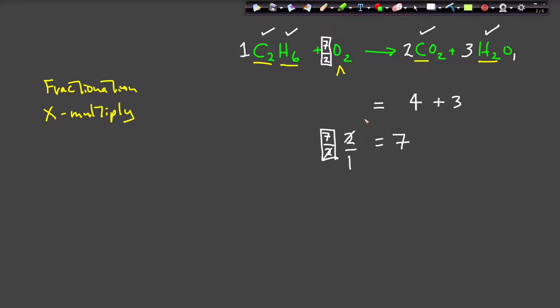And there you have it. That is what we mean by fractionation. I have now used a fraction to balance this chemical equation. Are my oxygens balanced? Yes. I have seven halves times two, which gives me seven. And on this side, I have seven. So this equation is indeed balanced.